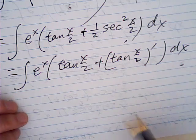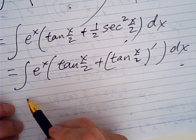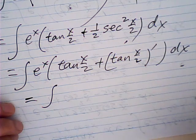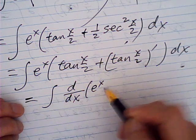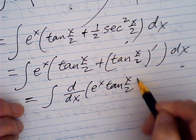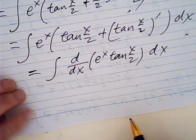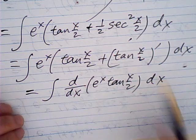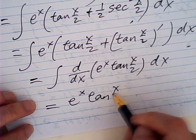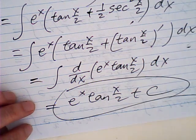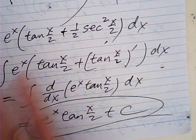So it's coming back again — this is a product, so this is equal to the derivative of e to the x times tangent half x with respect to x. This is the product rule protocol. So this is the same result: e to the x tangent half x plus C. That's another way of doing it. Okay, thank you for watching.